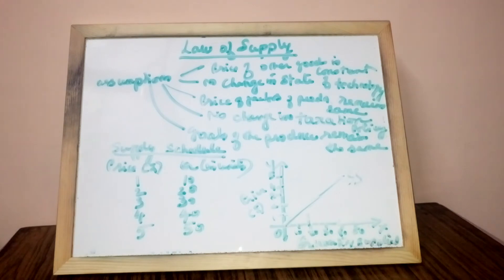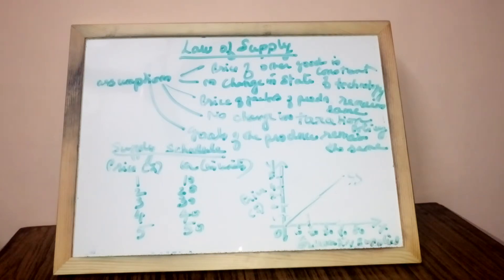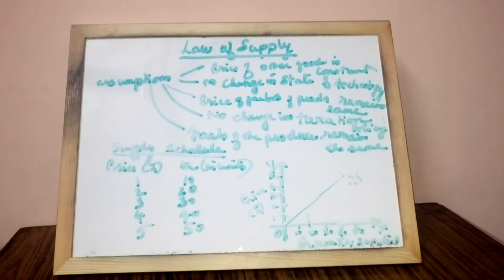The supply curve slopes upwards from left to right, indicating a direct relationship between price and quantity supplied. The important points of the law of supply are: there is a positive relationship between price and quantity supplied assuming other factors do not change, and it is a qualitative statement as it indicates the direction of change in quantity supplied.